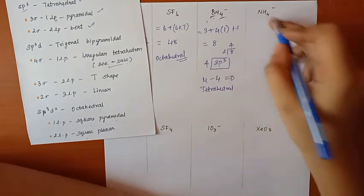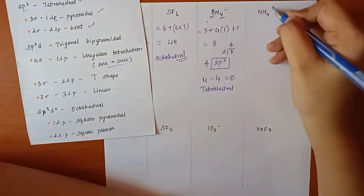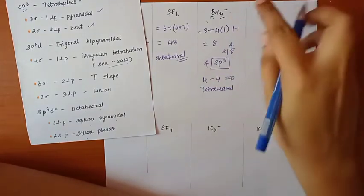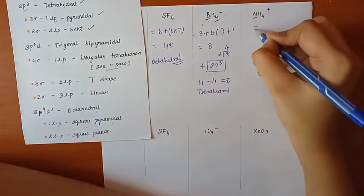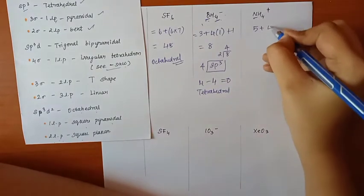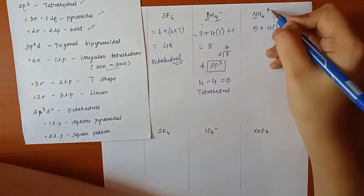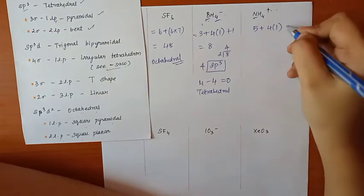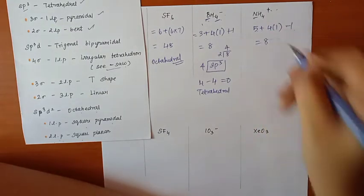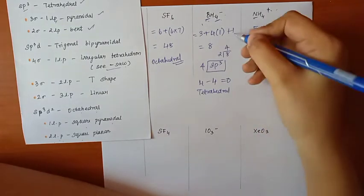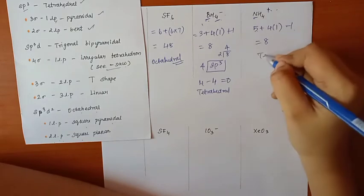NH4 plus: nitrogen is 5, plus 4 times hydrogen (1) = 4, minus 1 for the positive charge = 8. Following the same procedure, we get 4, which means SP3 hybridization — tetrahedral structure.